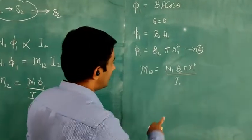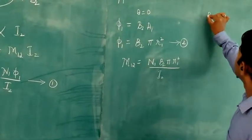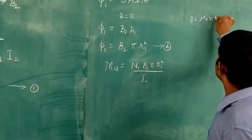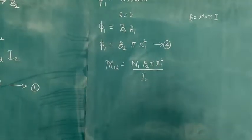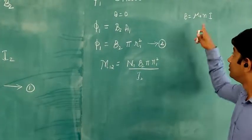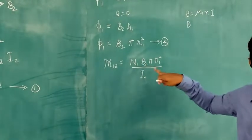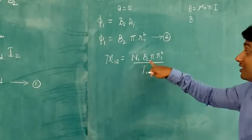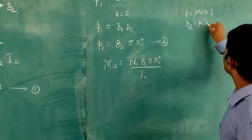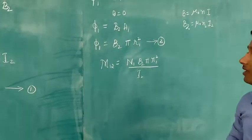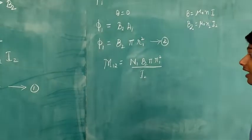Now, the magnetic field B is given by B = μ₀nI. So B2 equals μ₀n2I2, where n2 is the number of turns per unit length of solenoid S2.